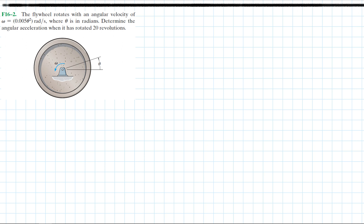In this problem, a flywheel rotates with an angular velocity of omega equal to 0.005 theta squared radians per second, where omega is given as a function of angular position and theta is in radians. We need to determine the angular acceleration when the flywheel rotates 20 revolutions.